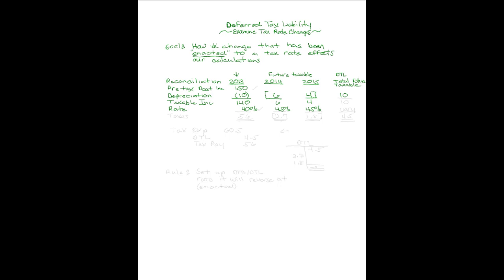It doesn't make sense to set up that future taxable amount at 40 percent if we know the rate is going to vary from there. So let's figure out what the future taxable reversals will be at the correct rate. Taxes payable will be 40 percent of 140, which equals 56. Then 45 percent of 6 equals 2.7, and 45 percent of 4 equals 1.8. These two total 4.5.